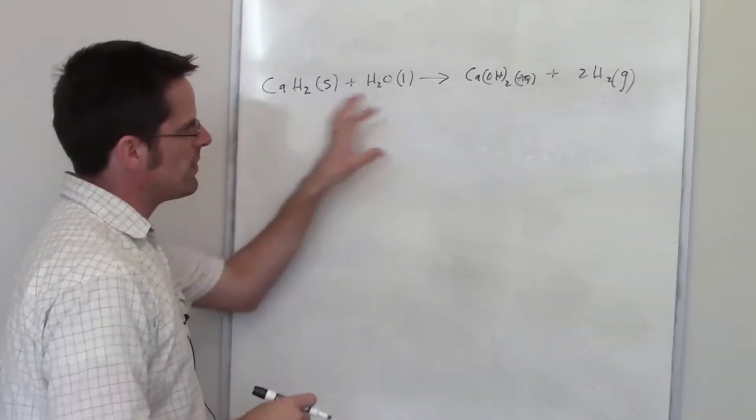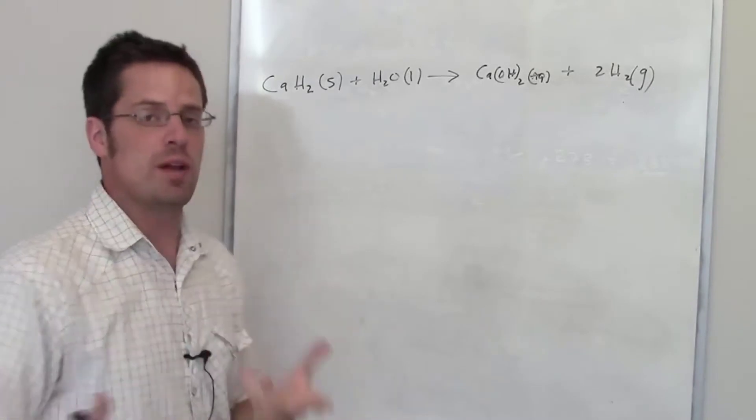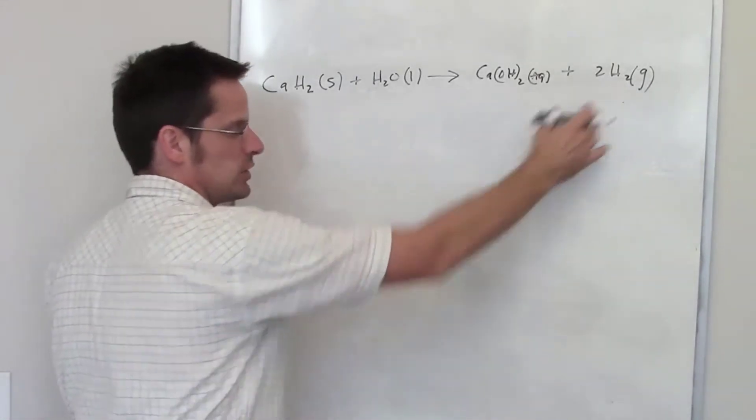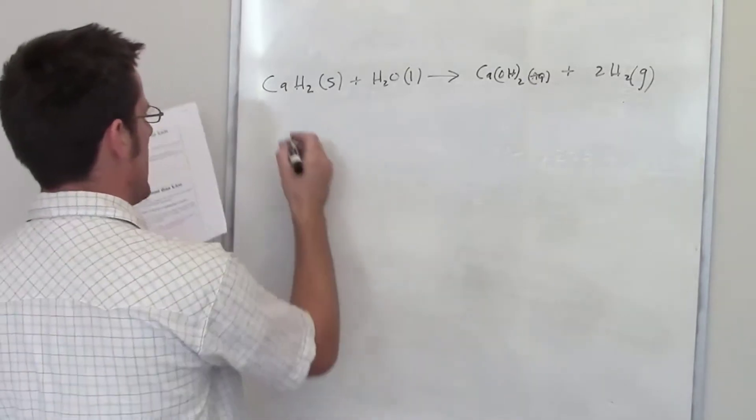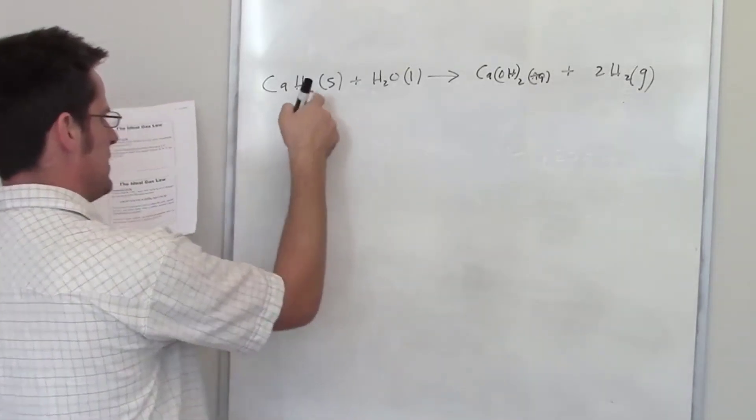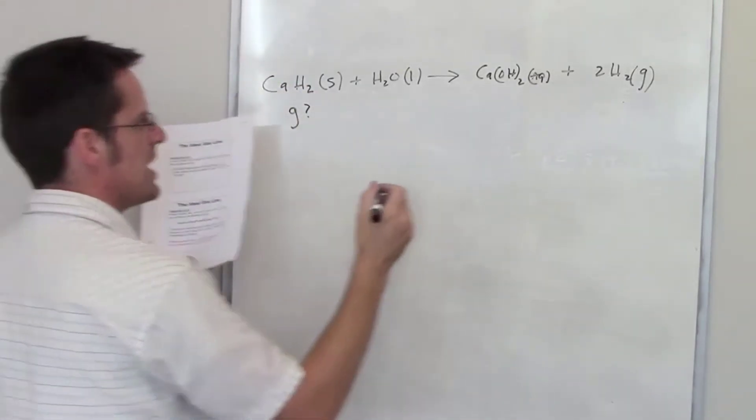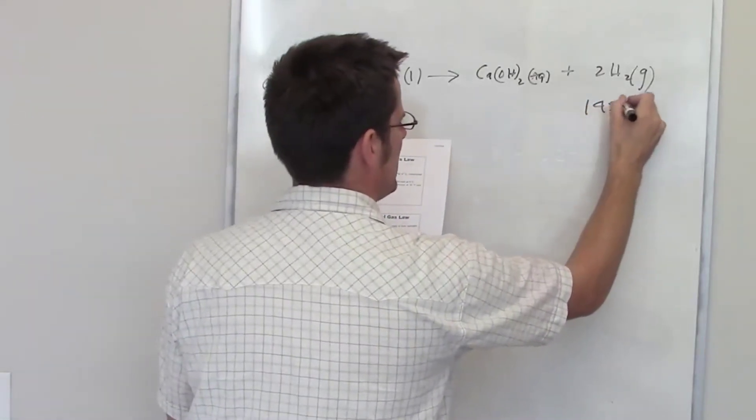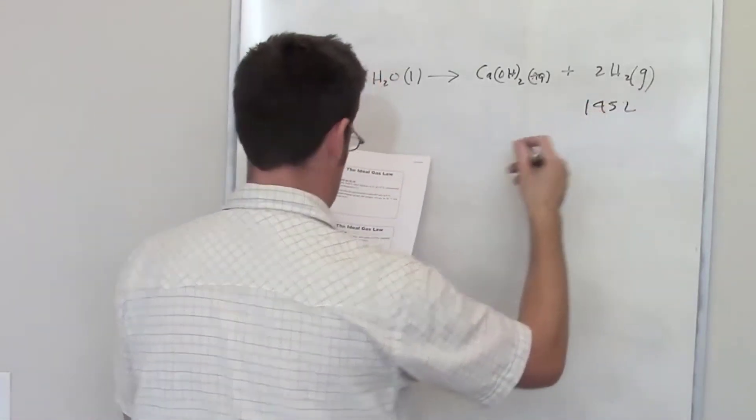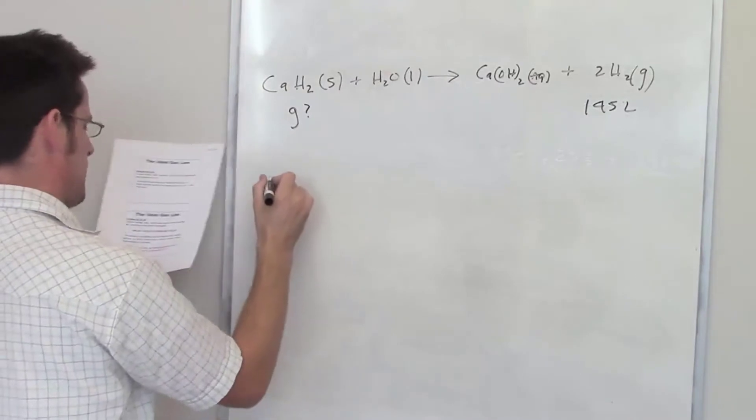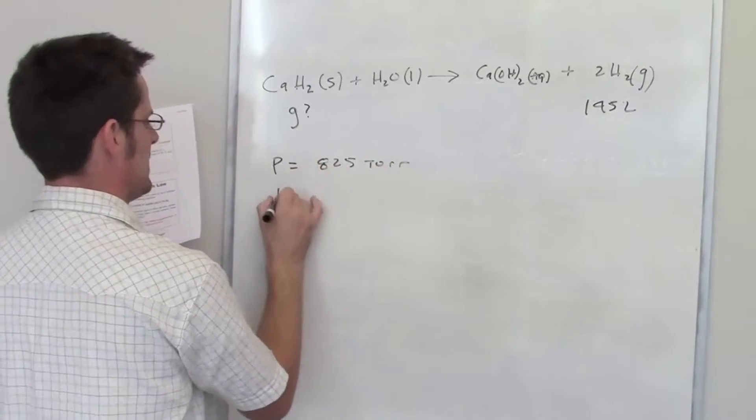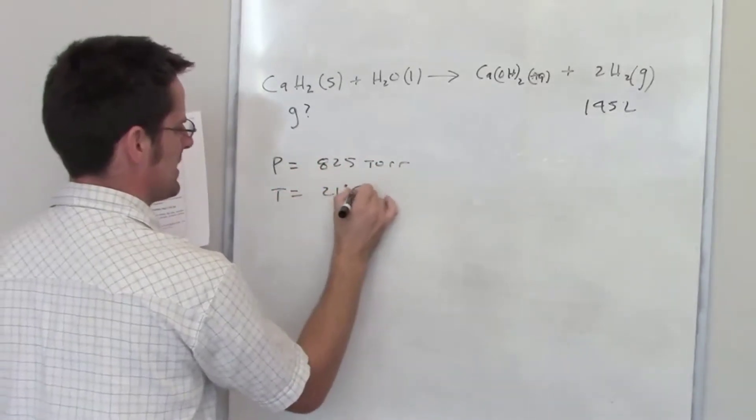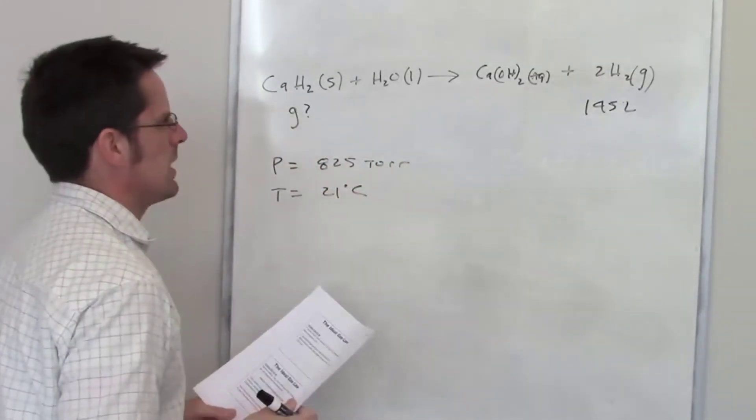This question tells us that when we run this reaction, and I've actually run this reaction in the lab before, it produces hydrogen gas. So it asks us how many grams of calcium hydride are needed to generate 145 liters of hydrogen gas if my pressure is 825 torr and my temperature is 21 degrees Celsius.